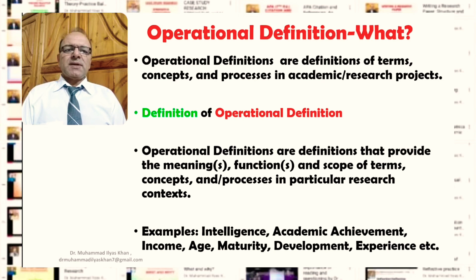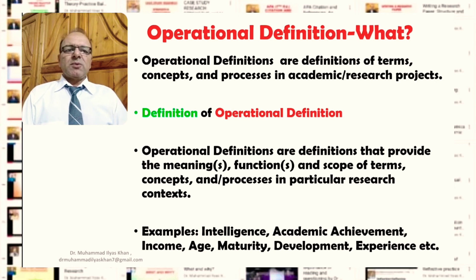Here are some examples of concepts or constructs that need to have operational definitions in a particular research context: intelligence, academic achievement, income, age, maturity, development, experience, and so on. These are some of the concepts that we make use of in a research context.